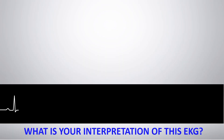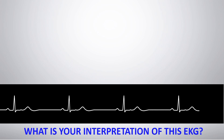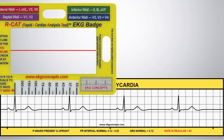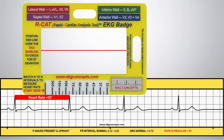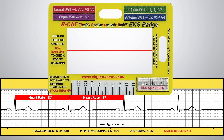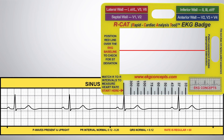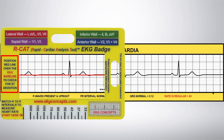What is your interpretation of this EKG rhythm strip? Sinus bradycardia. Using the EKG badge to accurately and quickly confirm, match the R to R intervals to measure the heart rate. The heart rate is consistently 37 beats per minute, which is less than the normal 60 beats per minute.